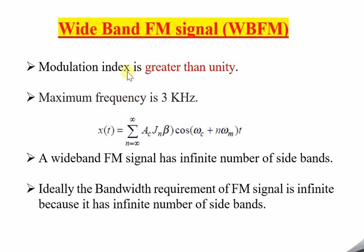Then the question arises: what is the maximum frequency of the wideband FM signal? The maximum frequency of wideband FM signal is 3 kilohertz, which is quite high. Whereas in case of narrowband FM signal, it is only 30 hertz — not kilo — just 30 hertz, which is very less. That is why it was called narrow. And here, since it is 3 kilohertz, we can say it has a wideband. That is why it is called a wideband FM signal.